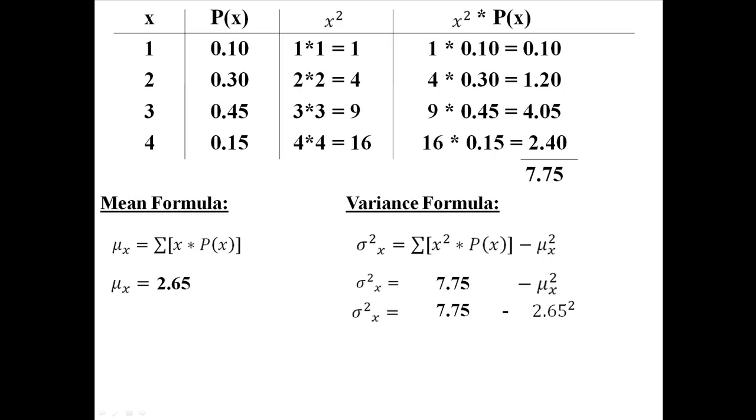And now we already know what the mean is, it's just 2.65. So the whole formula would be 7.75 minus 2.65 squared, which would be 7.75 minus 7.02, which would be 0.73. That would be the variance for this discrete random variable.